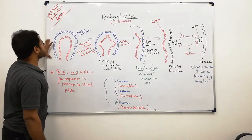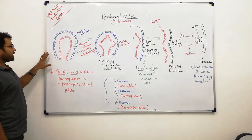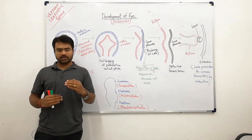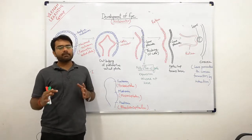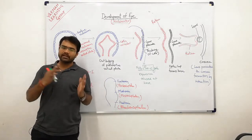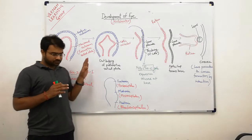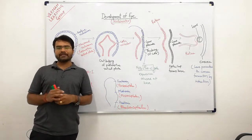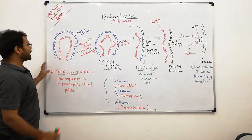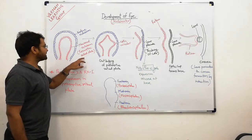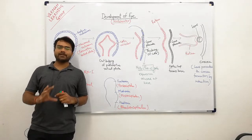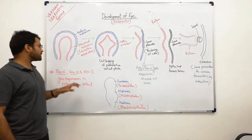Ectoderm, mesoderm, and endoderm are the three germ layers. When development occurs, these three germ layers divide and are responsible for development. The ectoderm is responsible for skin and nervous system development. Here, the neuronal ectoderm is called the presumptive retinal plate because it eventually becomes the retina.